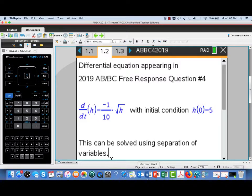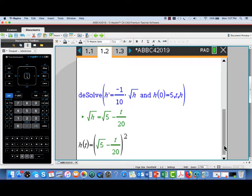where h was the level of water in the barrel. The initial condition was the height, or level, was five at time t equal zero. Now, this was on the non-calculator part of the exam, so it was certainly intended to be solved by separation of variables.